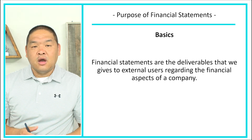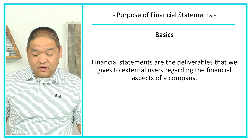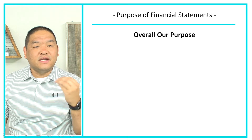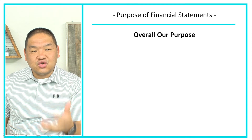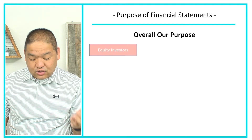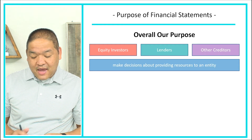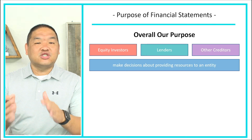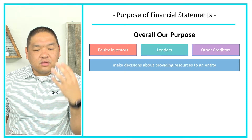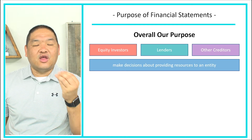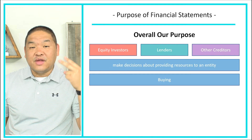At the end of the day, what are external users trying to do? Well, external users — investors like equity investors, lenders, or other creditors — need to be able to make decisions about providing resources to an entity. When looking at financial statements, they're trying to make three decisions: whether they want to buy, sell, or hold their investments with the company.